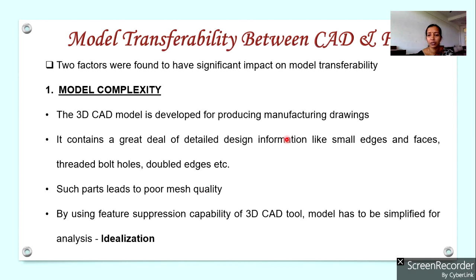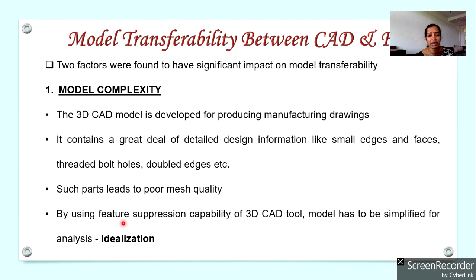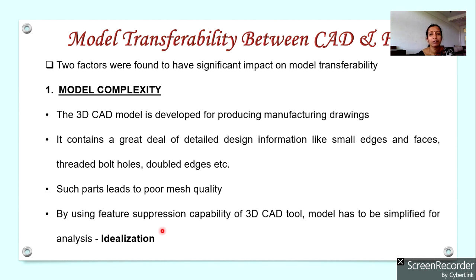If we perform meshing on small edges, small faces, holes, and double edges, the resulting meshes will be poor meshes. We have to take this model back to the CAD platform and use the feature suppression capability of CAD to simplify it. This process is known as idealization — simplifying the CAD model for analysis purposes.